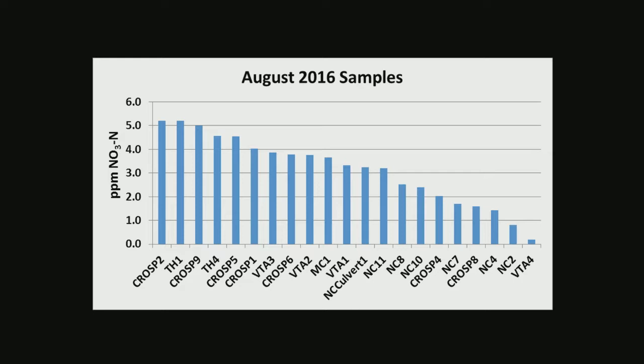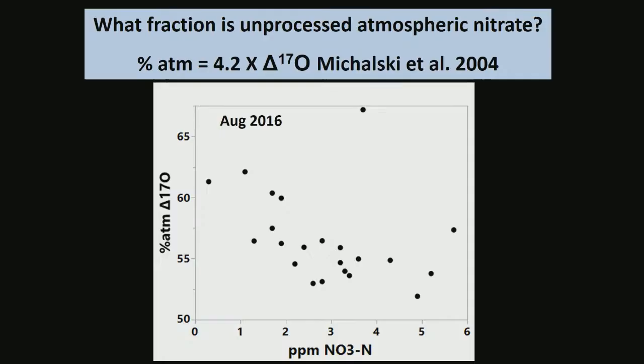Some sites have a lot, some have less, and there are reasons for it that we've been able to untangle. Thanks to collaborating with Meredith here, we were able to run the cap delta 17-O and estimate that between 50 and 65 percent of the nitrate showing up in the spring water is unprocessed atmospheric nitrate that is just flushing right through the system.